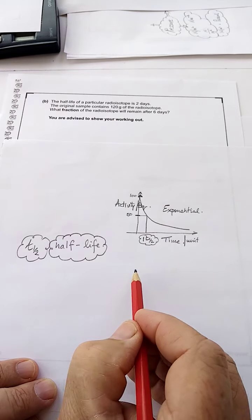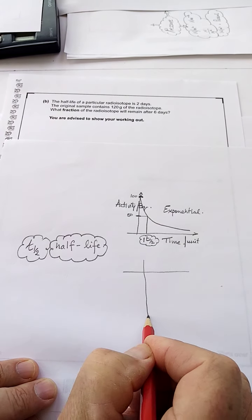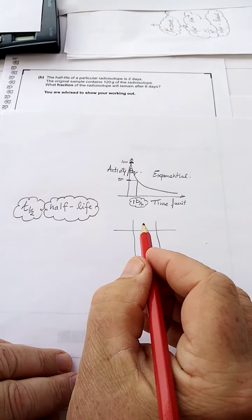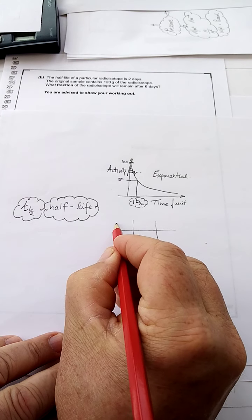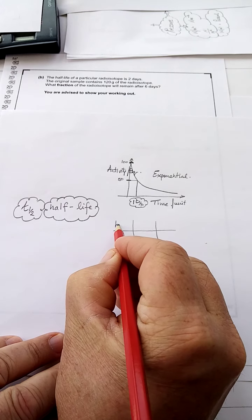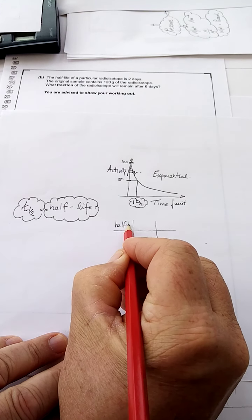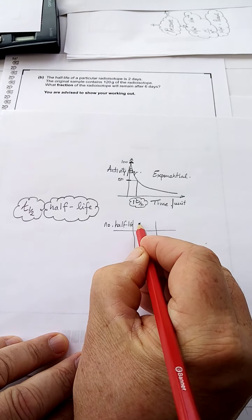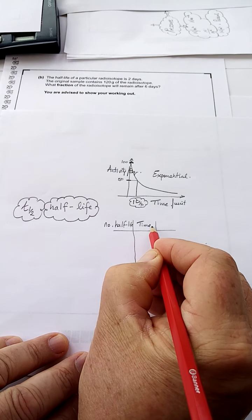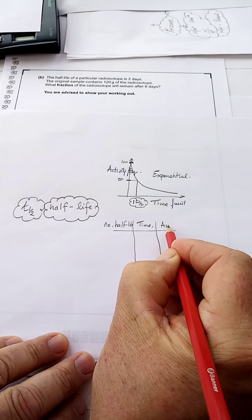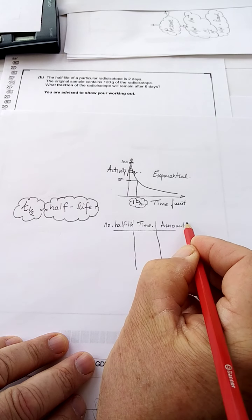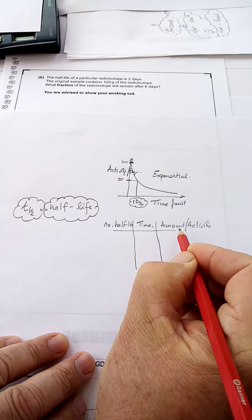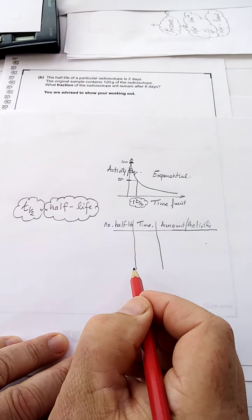The other way of doing half-life is something like a table like this here. And there's more or less three columns. The three columns would talk about half-life, and that's number, we're going to talk about time, and then the amount, or it could also be activity. So we'll do one here. I'll show you how this table works.